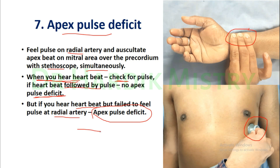Many students are confused about what is Heart Rate and what is Pulse Rate. Heart Rate means the number of times the heart beats, which we count or hear with the help of a Stethoscope. Pulse Rate is the number of times the pressure waves are transmitted along the walls of the artery during the systolic phase of the cardiac cycle. That is the difference between Pulse Rate and Heart Rate.